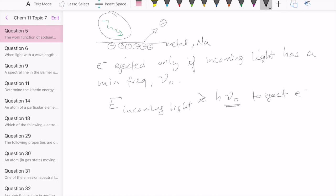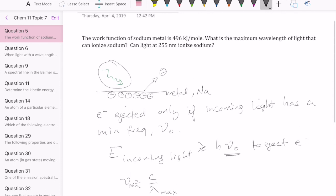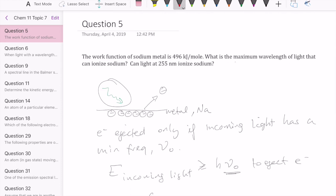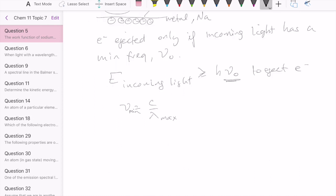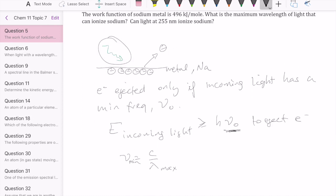Now, if the light has to have a minimum frequency and frequency is inversely proportional to wavelength, that means we're also asking for a maximum wavelength. And that's why in the question it's saying, what is the maximum wavelength? To solve this, we're going to have to figure out what that maximum wavelength is.